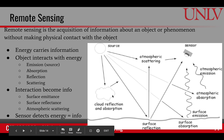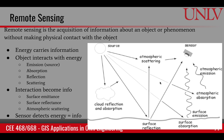We can also learn about clouds if the light is reflected by the clouds. So reflectance, emittance, absorption, and scattering are the typical measurements that we make at the sensor, and then we convert those into information about the target.